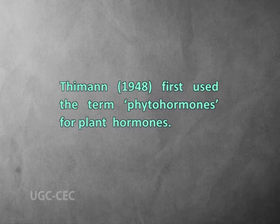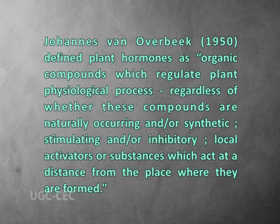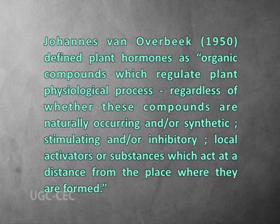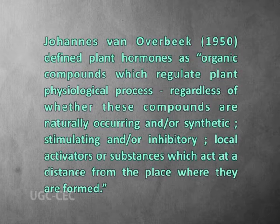Let us start with the introduction. Thamen, in 1948, first used the term phytohormones for plant hormones and defined them as an organic compound produced naturally in higher plants, controlling growth or other physiological functions at a site remote from its place of production and active in minute amounts. Further, Johannes van Overweg, in 1950, defined plant hormones as organic compounds which regulate plant physiological processes regardless of whether these compounds are naturally occurring and/or synthetic, stimulating and/or inhibitory local activators or substances which act at a distance from the place where they are formed.